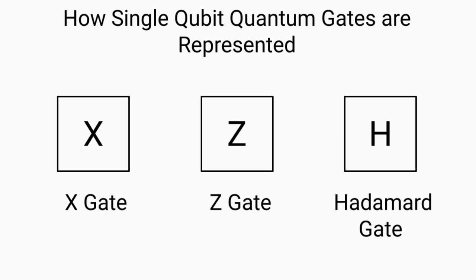Now let's take a look at how the single-qubit quantum gates that we've covered during our lectures are represented in quantum circuits. So first, we have the X gate, which, as you can see, is simply a box with an X in the middle of it. Secondly, we have our Z gate, which, like the X gate, is a box, but this time there's a Z in the middle of it.